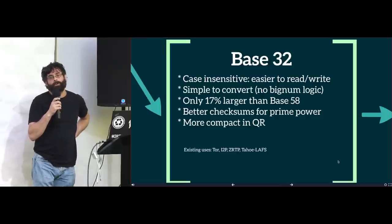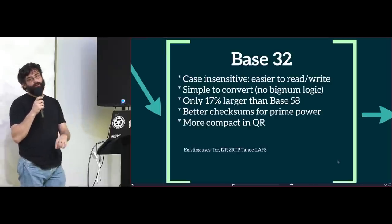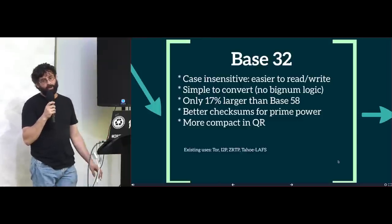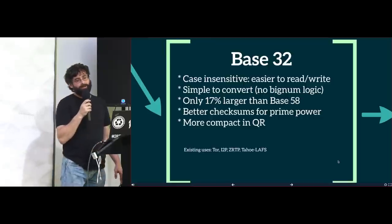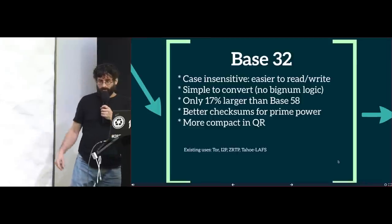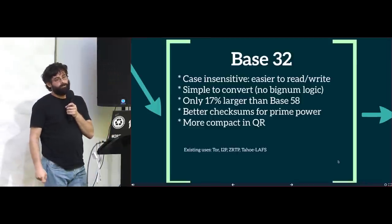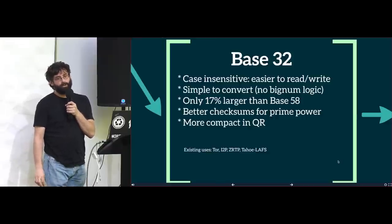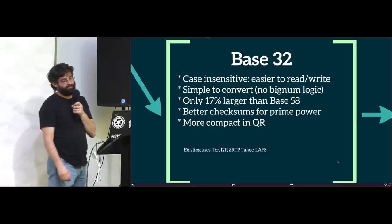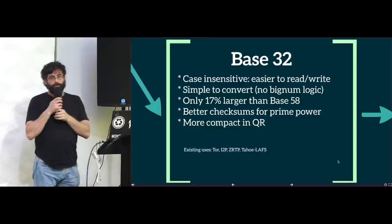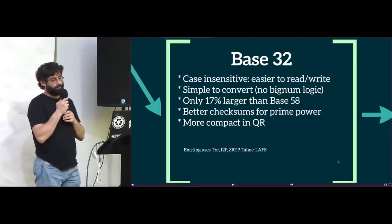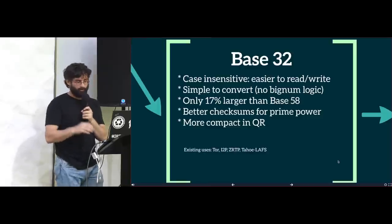Due to 32 being a prime power, which supports a mathematical field over the characters, we can use a lot of research on strong error detection codes — something that doesn't exist for base58. Due to being case-insensitive, it is also more compact to store in QR codes, which have a special mode for encoding alphanumeric data that only works for case-insensitive things. Base32 is already being used for many use cases, including onion addresses in Tor and I2P.